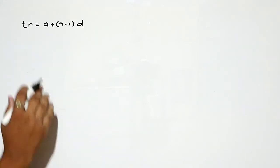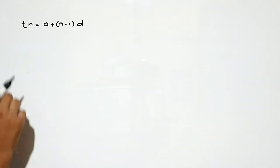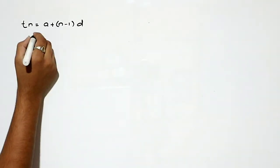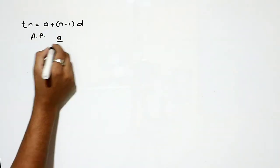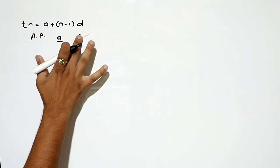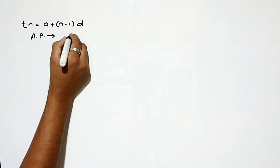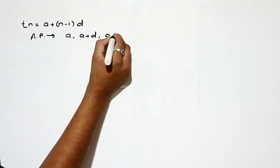In this lecture we will sum all these terms and derive a specific formula. Let's see the general arithmetic progression — the first term is a, the second term is a+d, then a+2d.